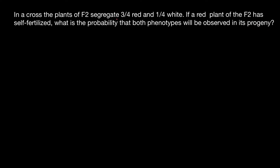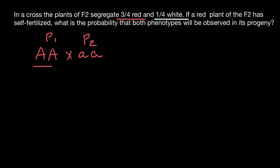As you see, the red pigment is dominant and white pigment is recessive. So let's start with the parental generation. We have one plant of the genotype capital A, capital A, and we cross with another plant which is small a, small a. We call this Parent 1 and Parent 2. The phenotype of Parent 1 is red and the phenotype of Parent 2 is white.